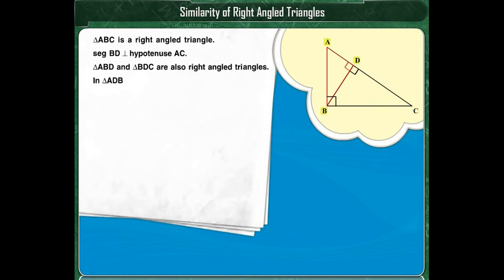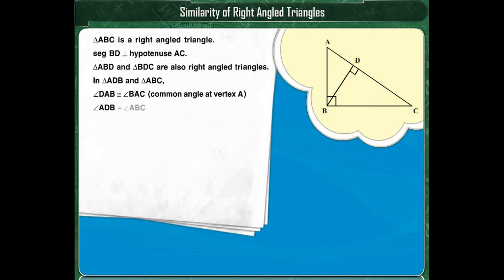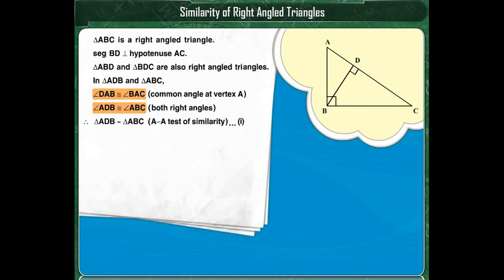Consider triangle ADB and triangle ABC. Angle DAB and angle BAC are congruent because that is the common angle made at vertex A. Angle ADB and angle ABC are both right angles and hence congruent. Therefore, by the AA test of similarity, triangle ADB is similar to triangle ABC.